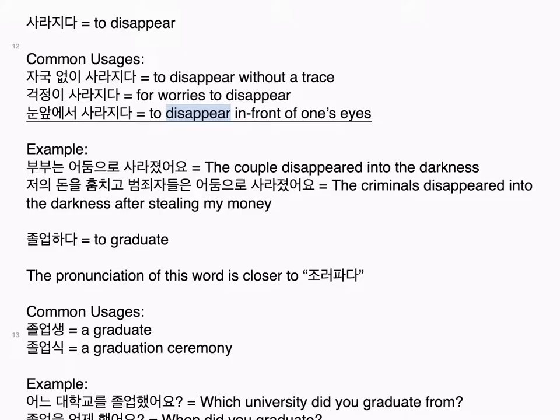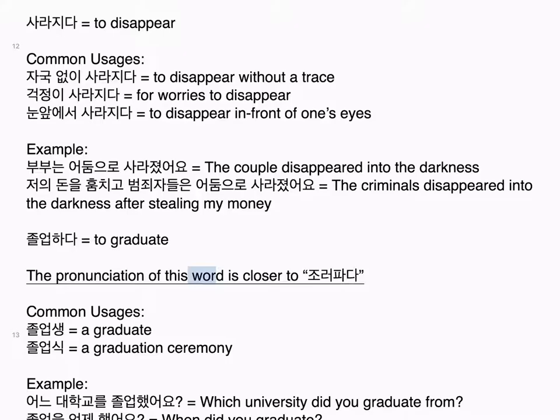사라지다 equals to disappear. Common usages: 자국 없이 사라지다 — to disappear without a trace; 걱정이 사라지다 — for worries to disappear; 눈앞에서 사라지다 — to disappear in front of one's eyes. Examples: 부부는 어둠으로 사라졌어요 — the couple disappeared into the darkness. 저의 돈을 훔치고 범죄자들은 어둠으로 사라졌어요 — the criminals disappeared into the darkness after stealing my money.